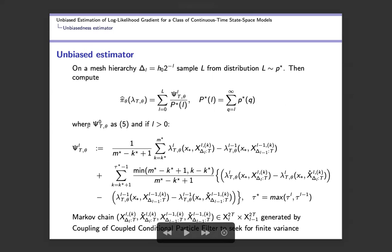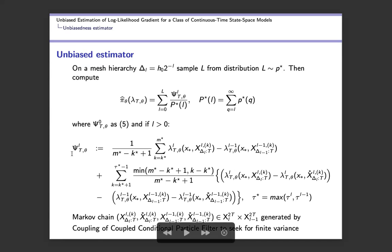To evaluate C_l, there are four trajectories involved: two for each of the two consecutive mesh sizes used in the coupled CPF. Beyond unbiasedness, we also want this estimator to have finite variance. To achieve finite variance, we need a coupling of these two coupled conditional particle filters that are used to generate psi_l.